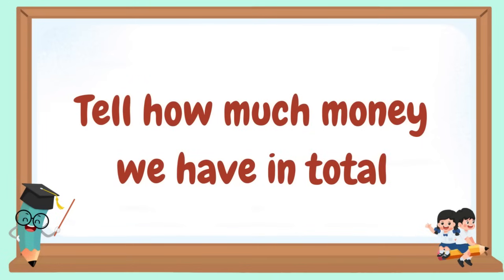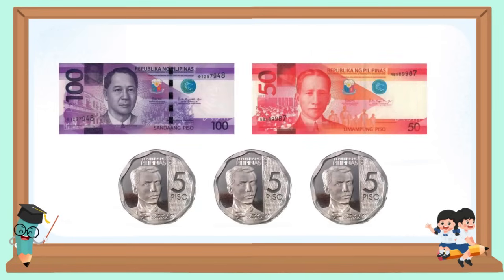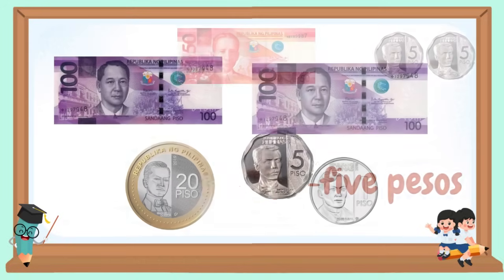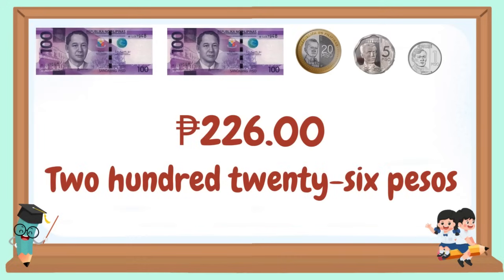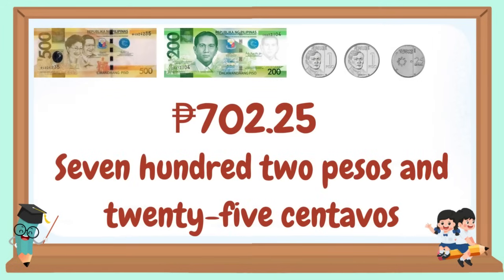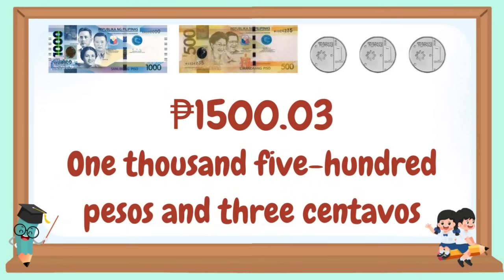Let's tell how much money we have in total. Examples: 80 pesos. 165 pesos. 226 pesos. 702 pesos and 25 centavos. 1,500 pesos and 3 centavos.